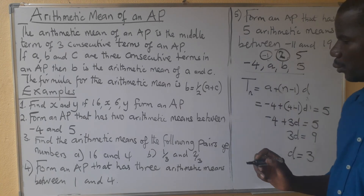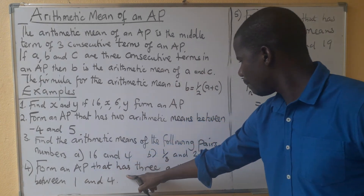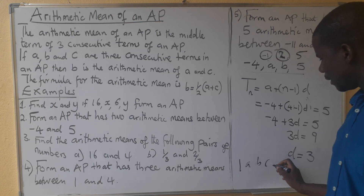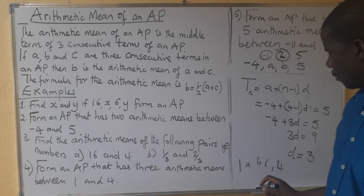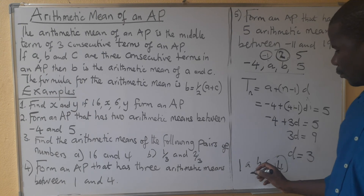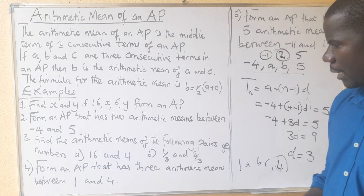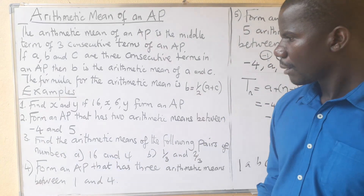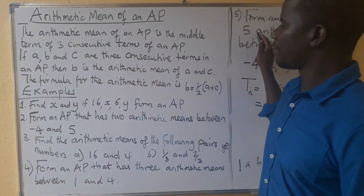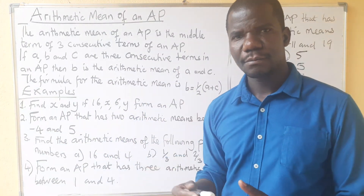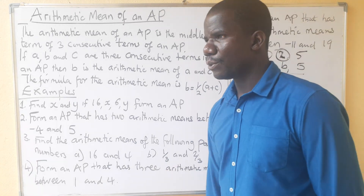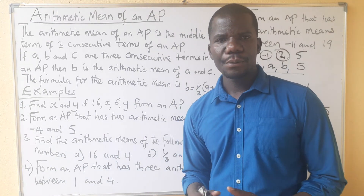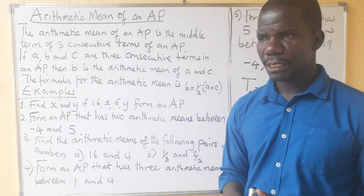This is the formula you use. For example, if asked to insert 3 arithmetic means, you would have terms A, B, C between the endpoints, making it the fifth term. I have given you questions 3, 4, and 5 for your practice so that you do not have challenges. I hope you have gotten something, and that is what is expected of you in the exam.